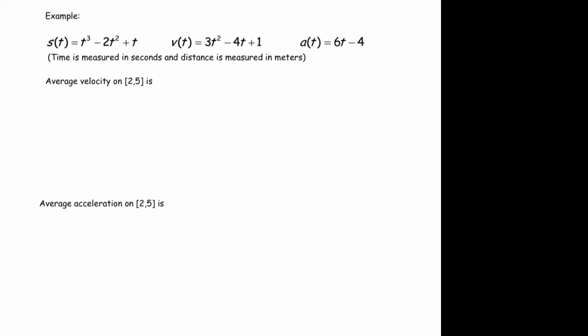So let's say we're asked for the average velocity on the interval two to five. Well, if you were doing this problem at the beginning of the course, you would use the position function and you would say, well the average velocity is just the average rate of change of position. So that's just going to be s of five minus s of two divided by five minus two.